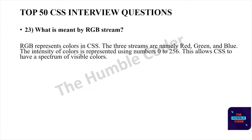What is meant by RGB stream? RGB represents color in CSS. The three streams are red, green, and blue. The intensity of colors is represented using numbers from 0 to 256. This allows CSS to have a spectrum of visible colors.